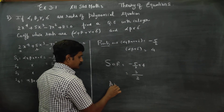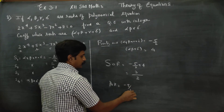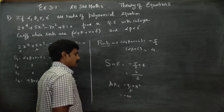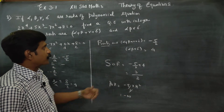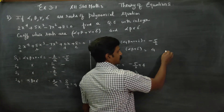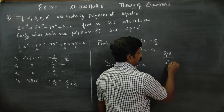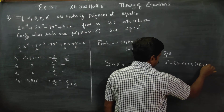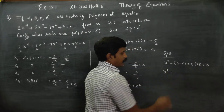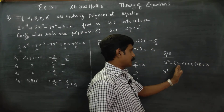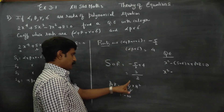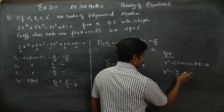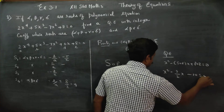Then the product of the roots is (-5/2) × 4 = -10. This is my sum of the roots, and this is my product of the roots. The quadratic equation formula from Class 10 is: x² - (sum of roots)·x + (product of roots) = 0. So: x² - (3/2)x + (-10) = 0, which gives x² - (3/2)x - 10 = 0.